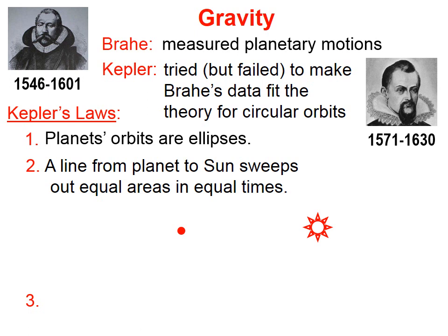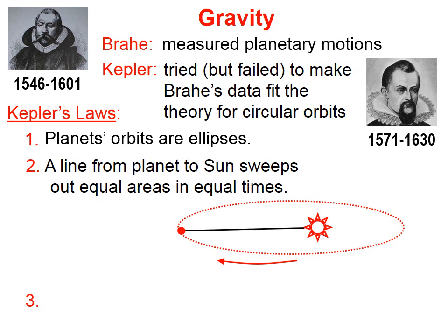So here on the left we have a planet, and on the right we have the sun. I've shown, with a dotted line, the path of this planet around the sun. If we draw an imaginary line between the planet and the sun, after some time interval has elapsed, the planet has moved. And you can see that that imaginary line has swept out a pie-shaped piece, and that pie-shaped piece has a certain area.